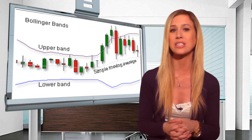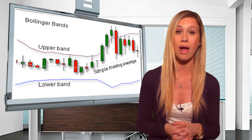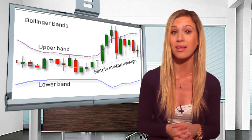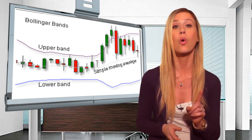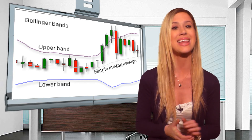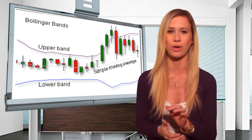Bollinger Bands expand and contract when the price action is volatile — expanding when price action is volatile, or contracting when price is bound to a tight trading pattern.